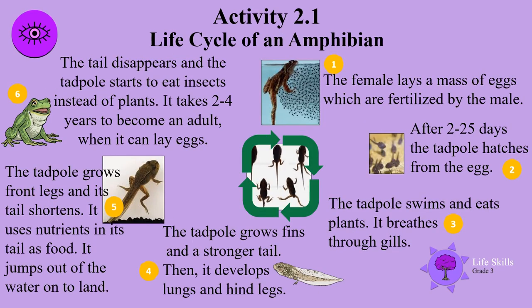Life cycle of an amphibian. Stage 1: the female lays a mass of eggs which are fertilized by the male. Stage 2: after 2 to 25 days, the tadpole hatches from the egg. Stage 3: the tadpole swims and eats plants. It breathes through gills.